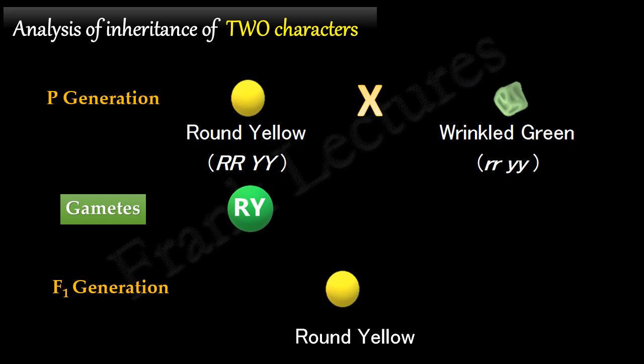Similarly, the gametes produced by the plant with wrinkled green seeds will be small r, small y.